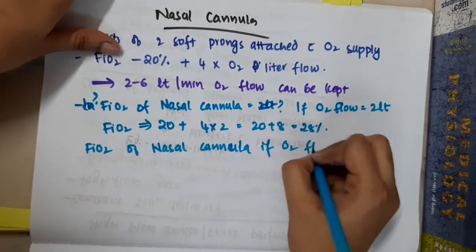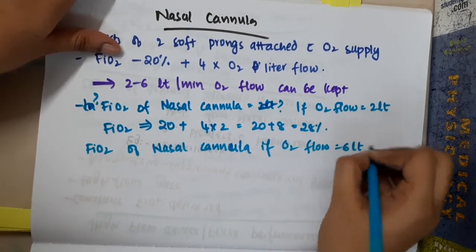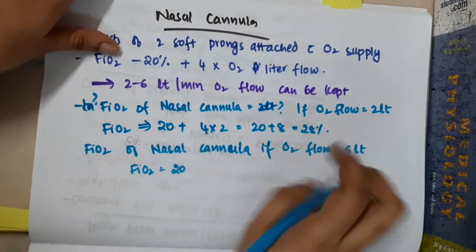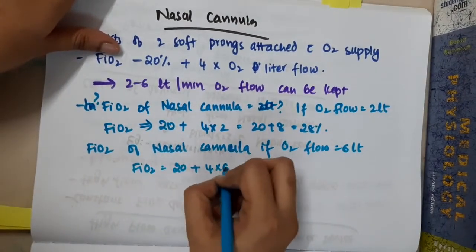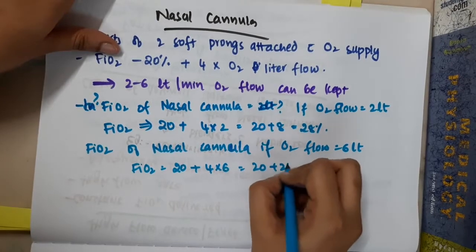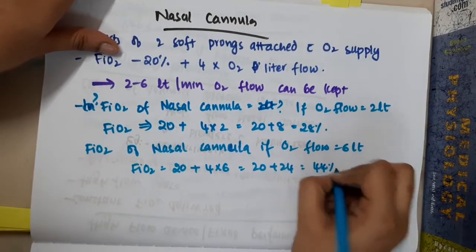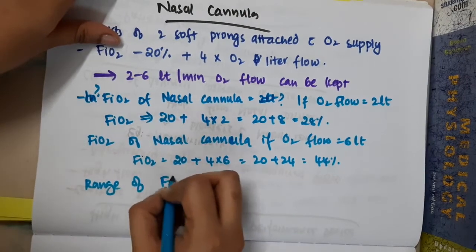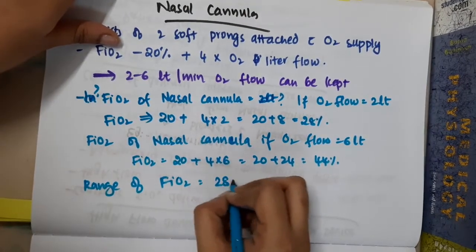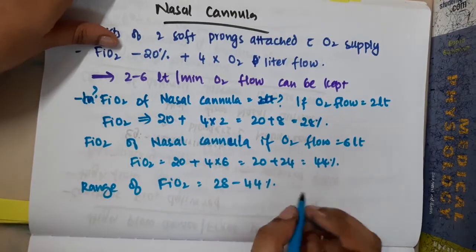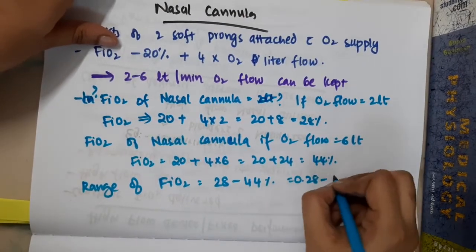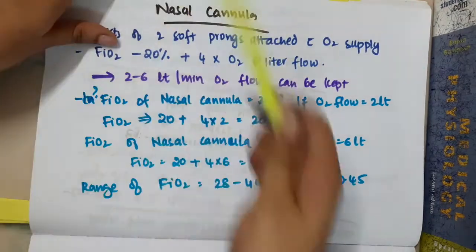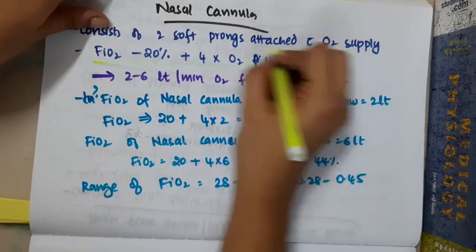Similarly, if oxygen flow is 6 liters per minute, FiO2 equals 20 plus 4 times 6, which is 20 plus 24, giving 44 percent. So the range of FiO2 for nasal cannula is 28 to 44 percent, or 0.28 to 0.45. You should remember these values.